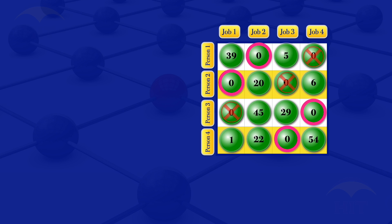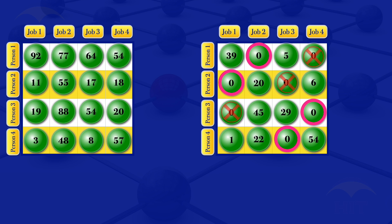Checking the matrix: person 1 is assigned job 2, person 2 is assigned job 1, person 3 is assigned job 4, and person 4 is assigned job 3. Consulting the original cost matrix: person 1 doing job 2 costs 77, person 2 doing job 1 costs 11, person 3 doing job 4 costs 20, and person 4 doing job 3 costs 8.